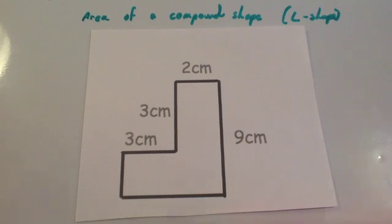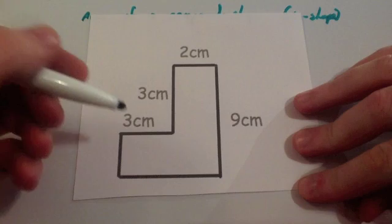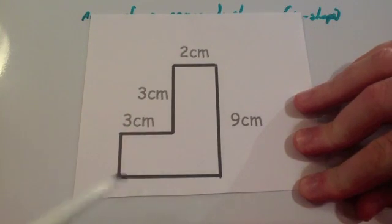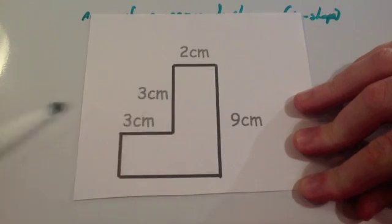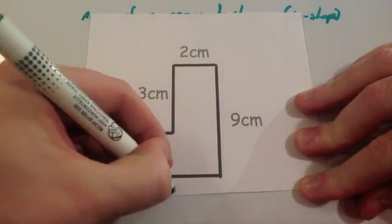Okay, so whenever you're doing the area of a compound shape, the first thing I tend to do is to find the missing sides first of all. So let's consider the base. Well it's 3 across here and 2 across here. Well 3 and 2, well that would make 5 for the base. 5cm.